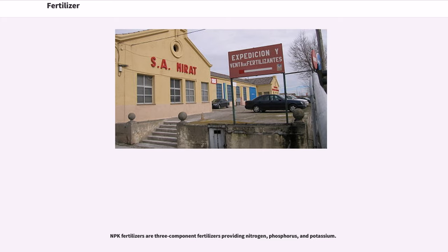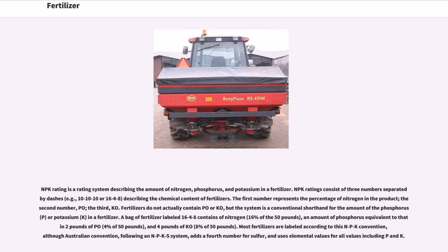NPK fertilizers are three-component fertilizers providing nitrogen, phosphorus, and potassium. NPK rating is a rating system describing the amount of nitrogen, phosphorus, and potassium in a fertilizer. NPK ratings consist of three numbers separated by dashes — for example, 10-10-10 or 16-4-8 — describing the chemical content of fertilizers. The first number represents the percentage of nitrogen in the product; the second number, P₂O₅; the third, K₂O.